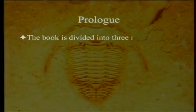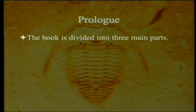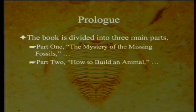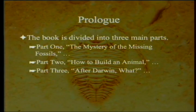In the prologue, it says the book is divided into three main parts, and it is. Part 1: The Mystery of the Missing Fossils. Part 2: How to Build an Animal. And Part 3: After Darwin, What?